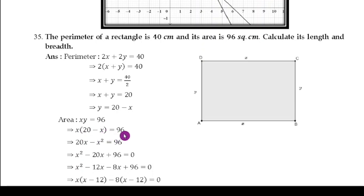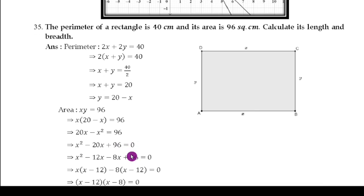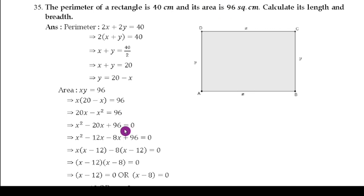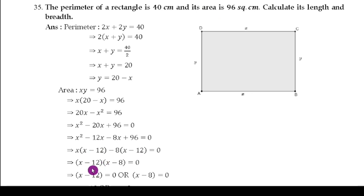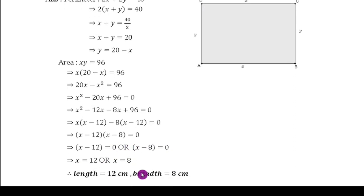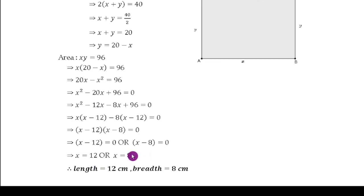Use factorization: multiply to get 96, add to get 20 — the numbers are 12 and 8. So x² − 12x − 8x + 96 = 0. Factor: x(x − 12) − 8(x − 12) = 0, giving (x − 12)(x − 8) = 0. Therefore x = 12 or x = 8. So length = 12 cm and breadth = 8 cm.